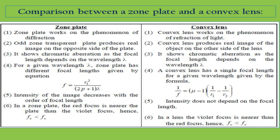The light is refracted from different points of the lens and converges at a point corresponding to the focus of the lens. A zone plate produces a real image. A zone plate shows chromatic aberration — it has different foci for different wavelengths of light. In a zone plate, the focal length depends on lambda: F = Rn²/(N·lambda), so it also shows chromatic aberration.